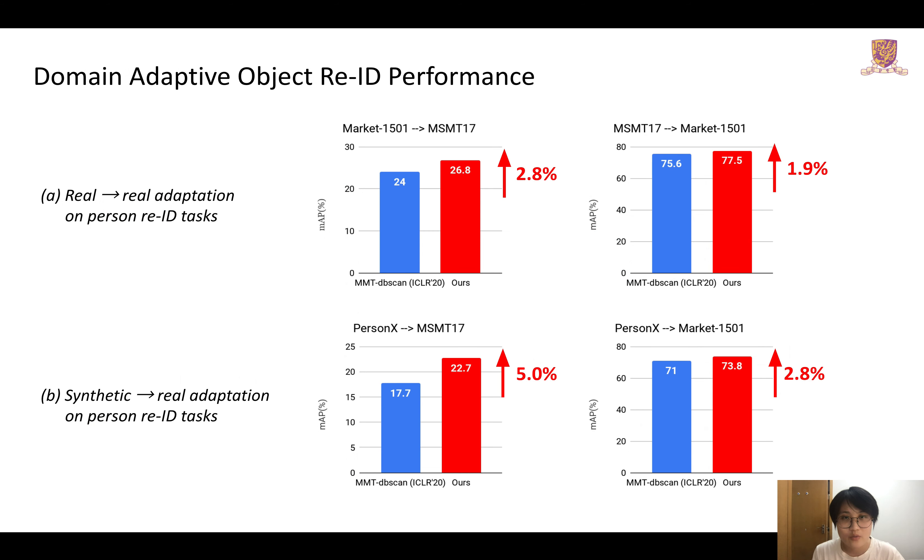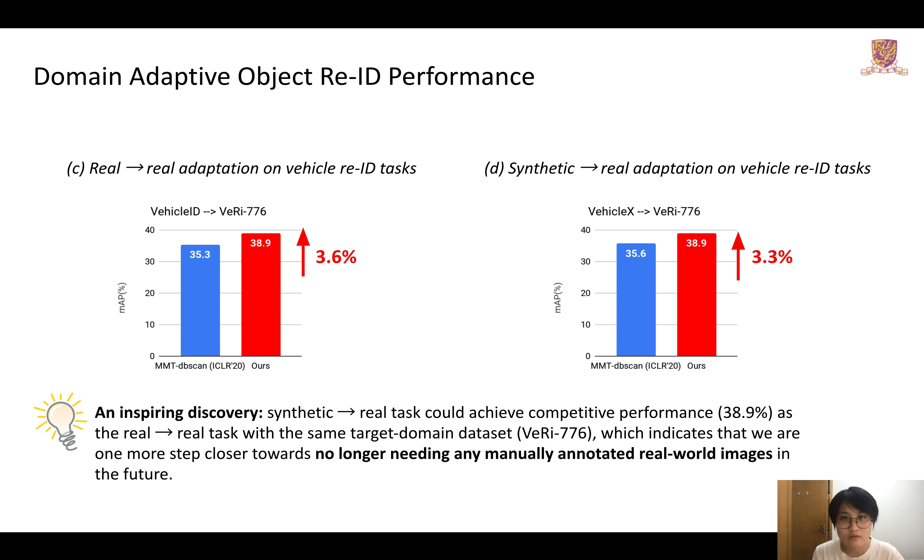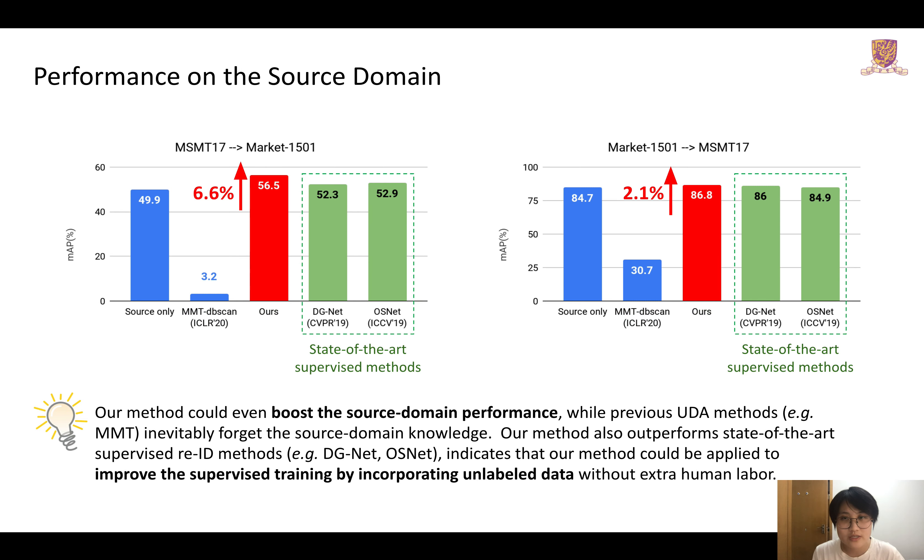Here are the results. We achieved up to 5% improvements on domain-adaptive person Re-ID tasks. The superiority of our method can also be observed on domain-adaptive vehicle Re-ID tasks. Our method could also boost the source domain performance, indicating that our method could be applied to improve the supervised training by incorporating unlabeled data.